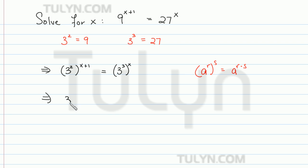So on the left side, we're going to get 3 to the 2 times x plus 1. And on the right, we're going to get 3 to the 3 times x.